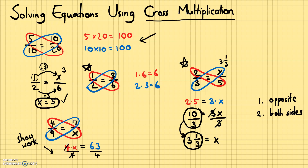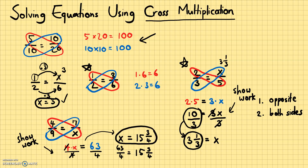When you're just starting to solve equations, I highly recommend you show all your work, because the answers are sometimes counterintuitive. Show which number you're dividing by and which operation you're doing to both sides. The 4 cancels on the left, so x equals 63 divided by 4, which is 63 over 4. As a mixed number: 4 goes into 63 fifteen times with remainder 3, so that's 15 and 3 fourths.